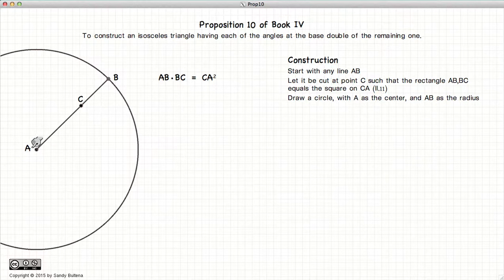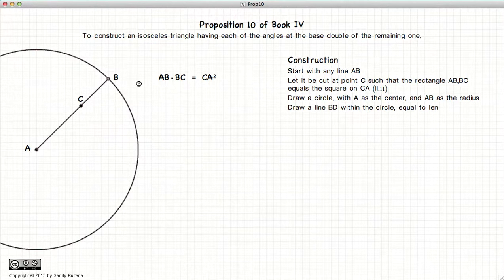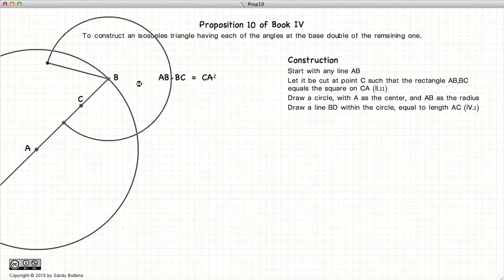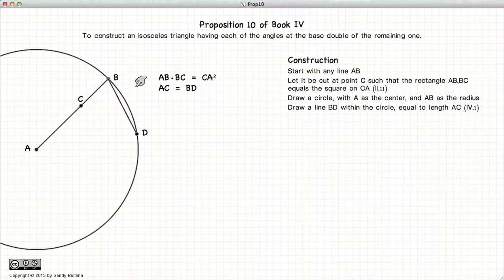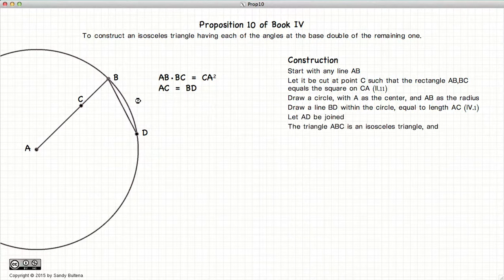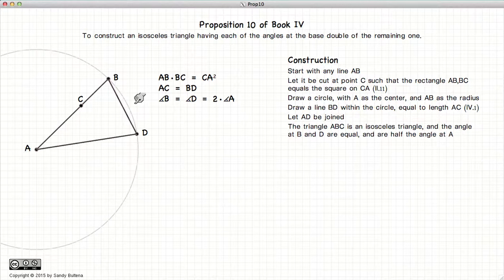The next thing we do is we draw a circle where A is the center and AB is the radius. And now we copy the line AC to the point B, just like was shown in Proposition 1 of Book 4. And we label this point D. So again AC is equal to BD. And we join the line AD. And now we have an isosceles triangle where the angle at B is twice the angle at A and the angle at D is twice the angle at A.